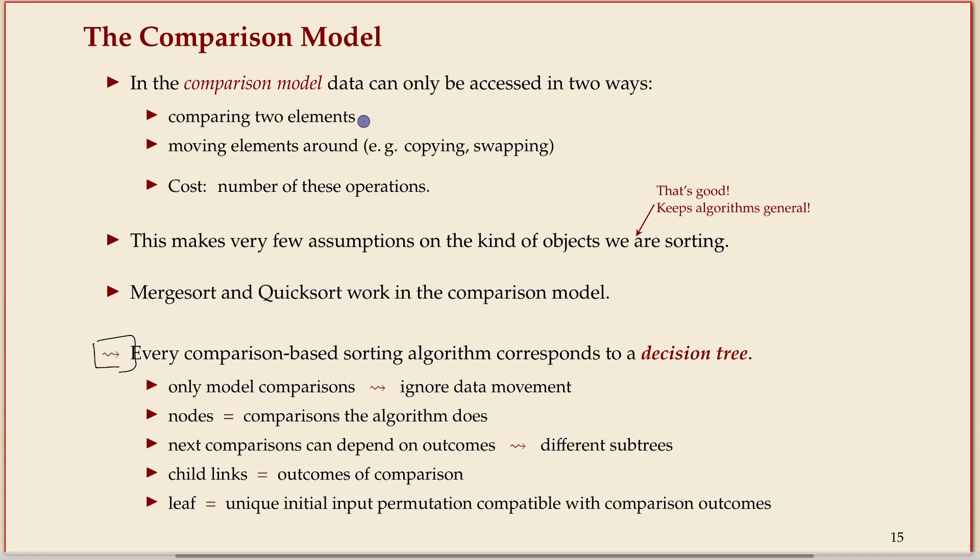Comparisons in this model are only one type of comparison, say less or equal, so it has two outcomes: yes or no. And then the algorithm is not allowed to do anything else with the object. So everything it has to do with moving them around has to be based on the yes or no answer from comparisons.